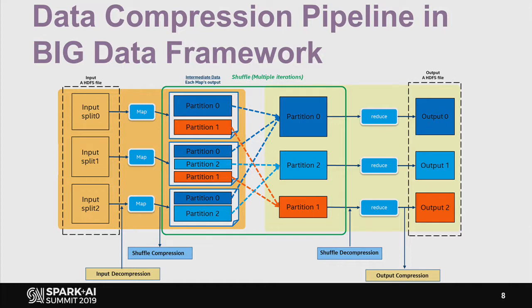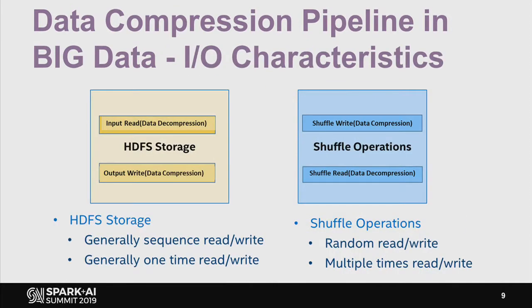For input and output data, it also involves disk read-write and network transfer, which we can also consider optimizing. There are two types of data movements: input/output data and intermediate data. For input/output, the data is stored in HDFS; for shuffle, data is stored on local disk. The I/O characteristics differ — for HDFS it is usually sequential read-write, but for shuffle it is always random read-write.